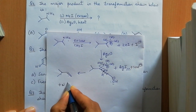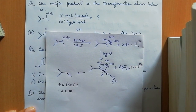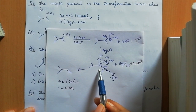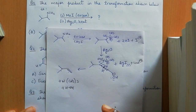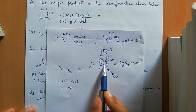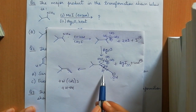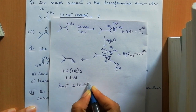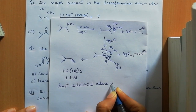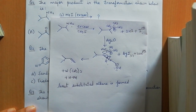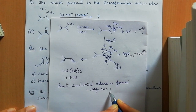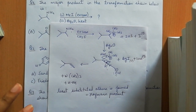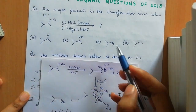You might ask why these hydrogens are attacked and not others, since hydrogens exist at multiple positions. Remember that in Hofmann elimination, the least substituted alkene is formed. The least substituted alkene is only formed when the most accessible hydrogens are removed. This product is known as the Hofmann product, and looking at the options, option C is correct.